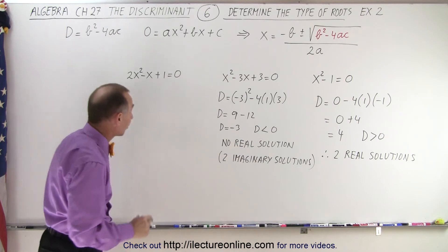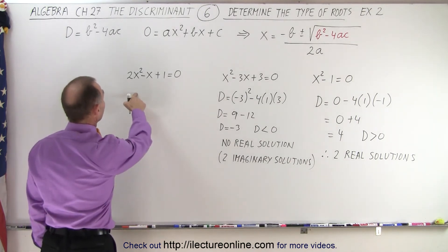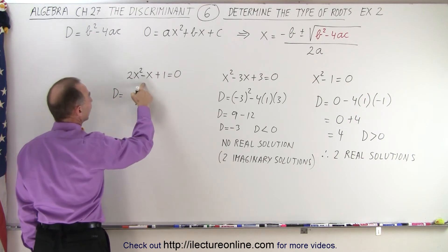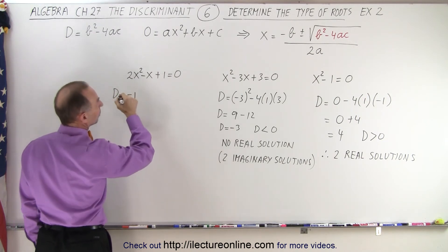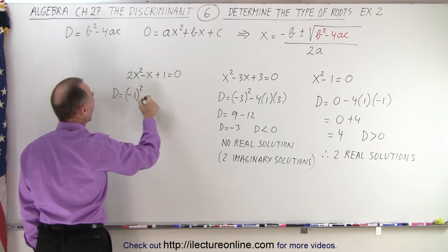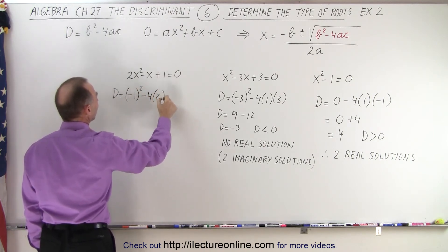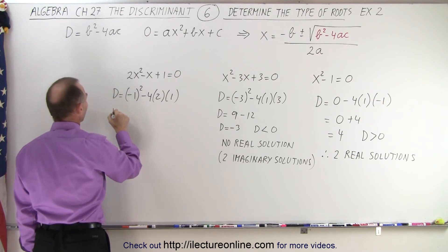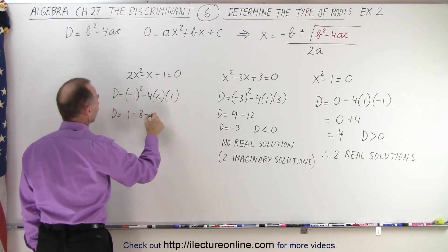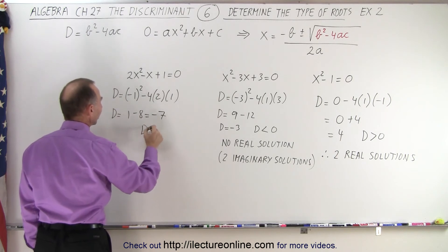All right, let's see what our third one gives us. Here again, we're going to calculate the discriminant. The discriminant is equal to b squared, not minus b squared, but b squared, so negative 1 squared, minus 4 times a times c. So d equals this is a positive 1, minus 8, which is minus 7, so d is less than 0.